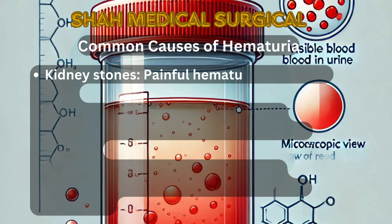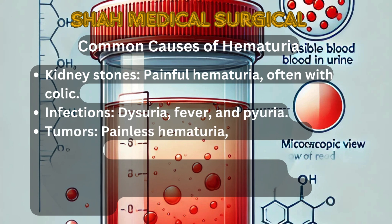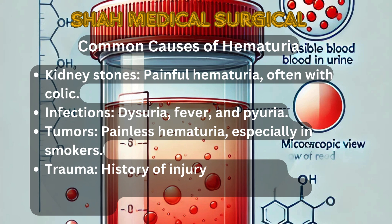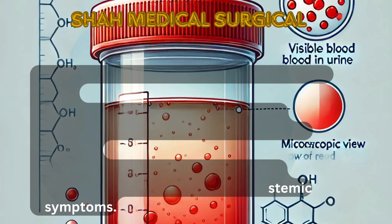Common causes of hematuria include: kidney stones, where hematuria often accompanies painful renal colic; infections, where dysuria, fever, and pyuria are present with UTIs; tumors, where painless hematuria especially in smokers may indicate malignancy; trauma, where hematuria could result from injury or accident; and glomerulonephritis, presenting with dark urine and systemic symptoms like edema or hypertension.